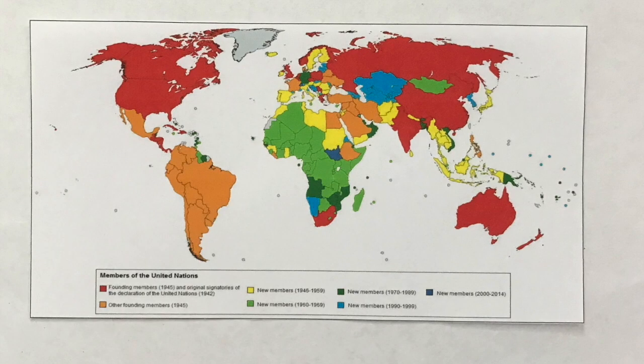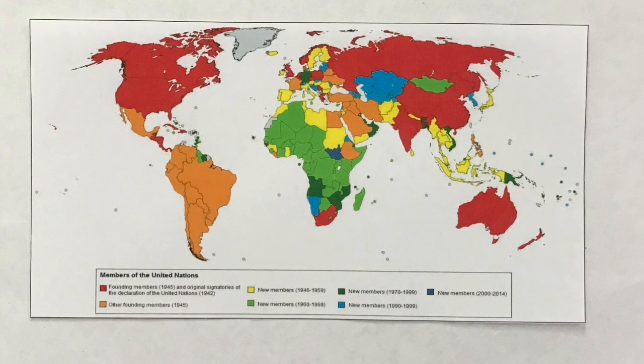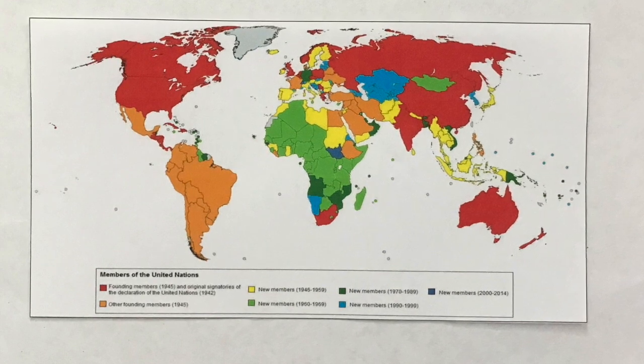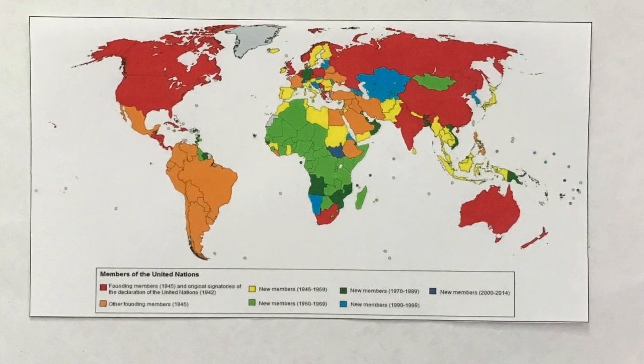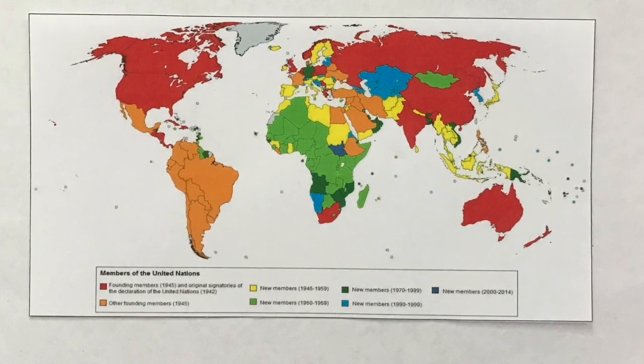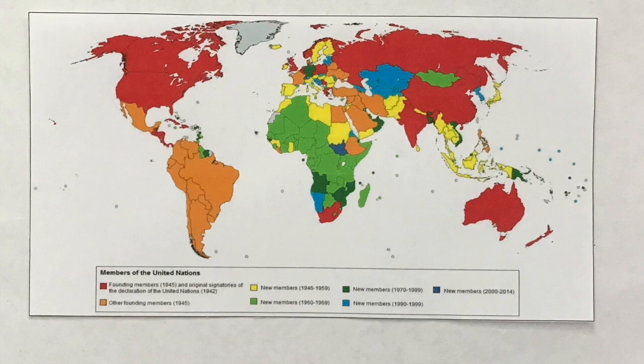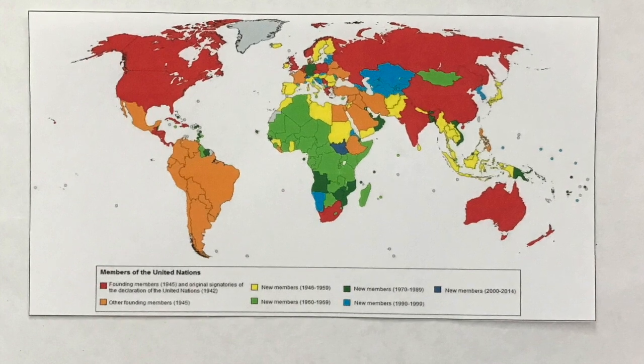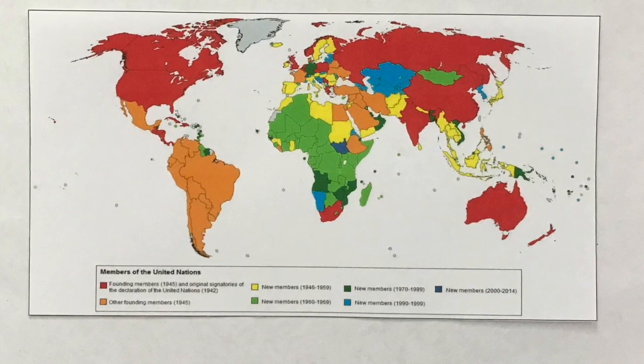This map shows the current member states of the United Nations. When it was organized in 1945, the UN had only 51 members. It now has 193.